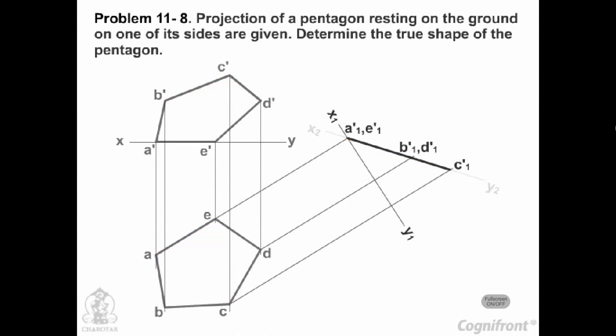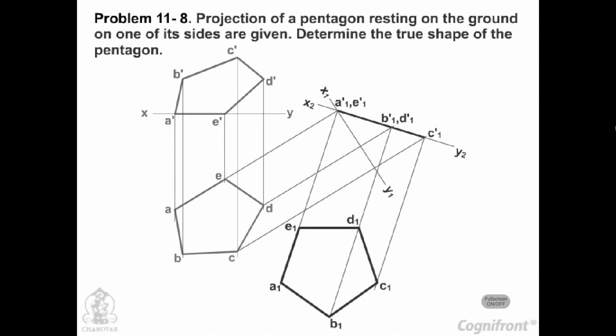Draw another reference line x2 y2 parallel to A dash 1 c dash 1 and project an auxiliary top view A1 B1 C1 D1 E1 which will be the true shape of the pentagon.